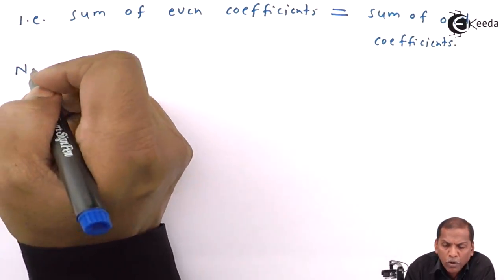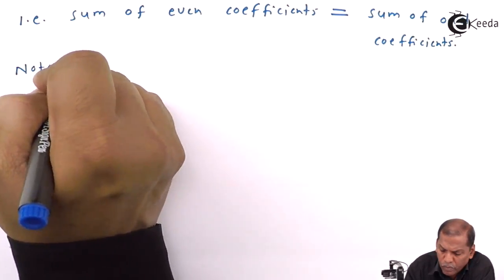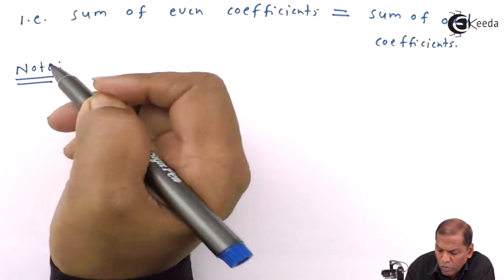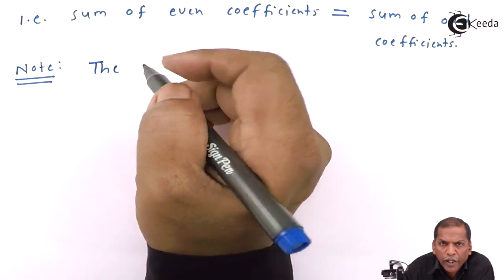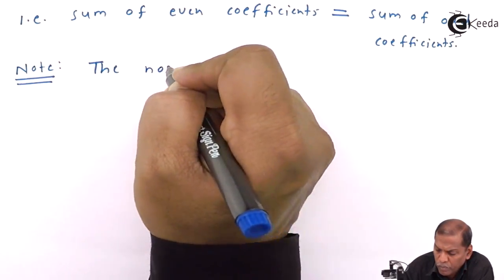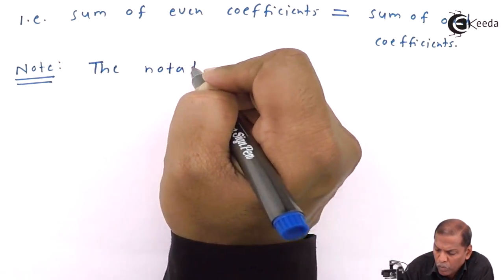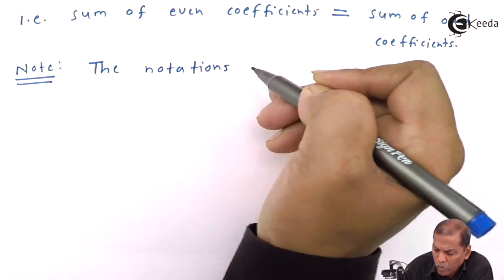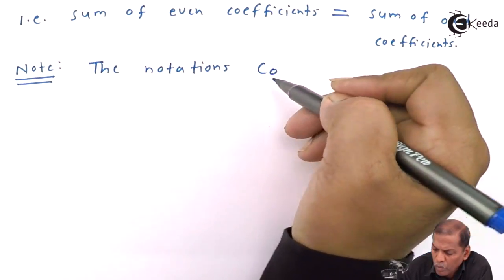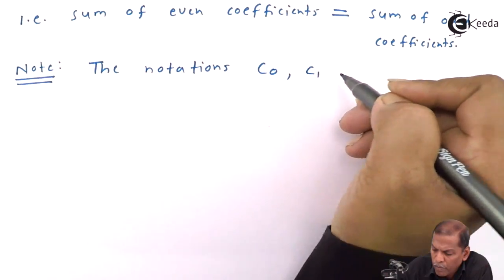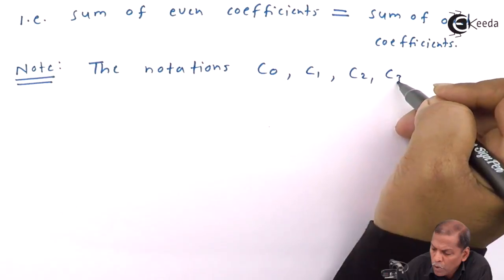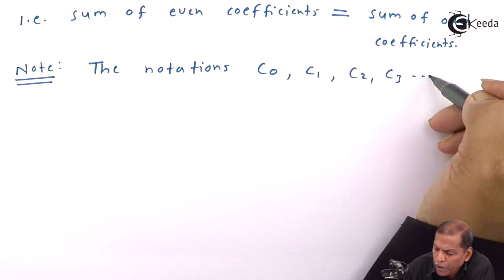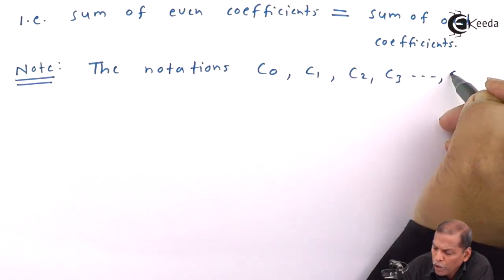Now let's see the note. The notations C0, C1, C2, C3, and so on